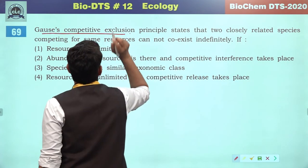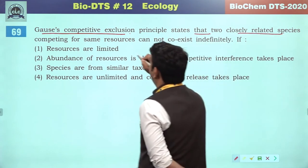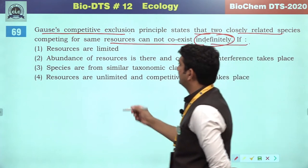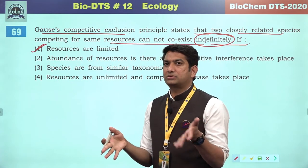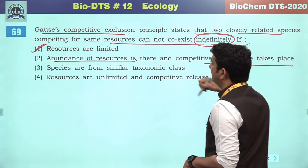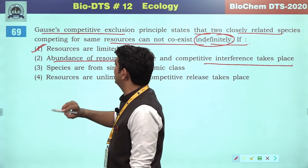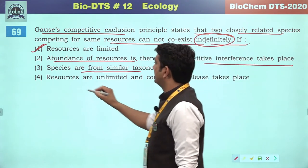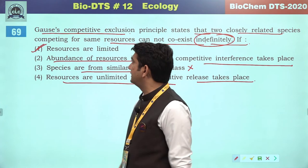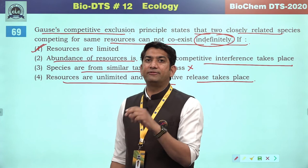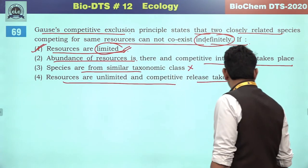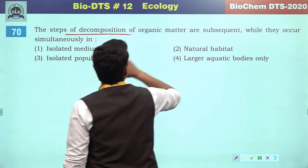Gause's competitive exclusion principle states that two closely related species competing for the same resources cannot coexist indefinitely if resources are limited. If resources are limited and two organisms compete, eventually one has to be eliminated. Species being from a similar taxonomic class is not necessary. Resources being unlimited leads to competitive release. According to Gause's principle, the superior one will eliminate the inferior one due to limited resource availability. The first will be the correct answer.